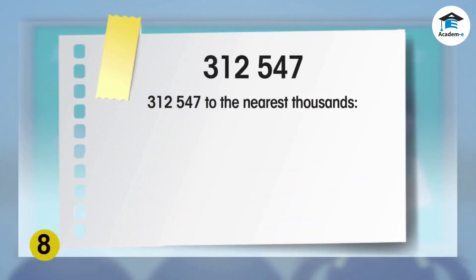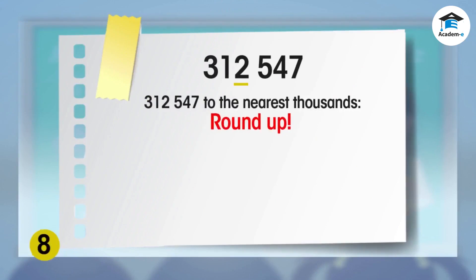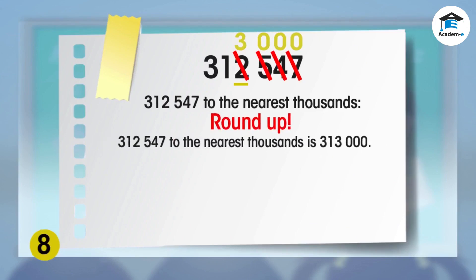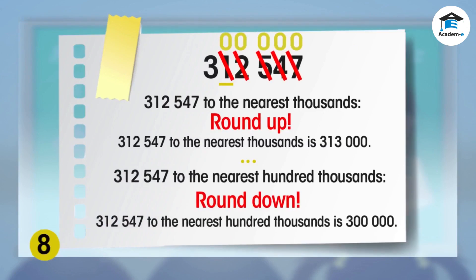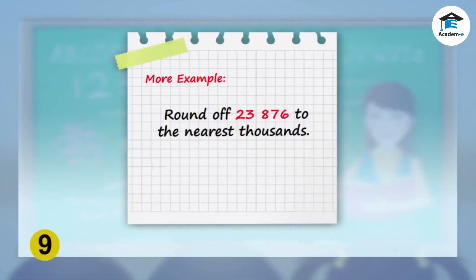See how the same numbers round off to the nearest thousands and hundred thousands. Now practice with more examples. Mark the digit in the thousands place, then look at the digit to the right and decide whether you'll round up or round down.